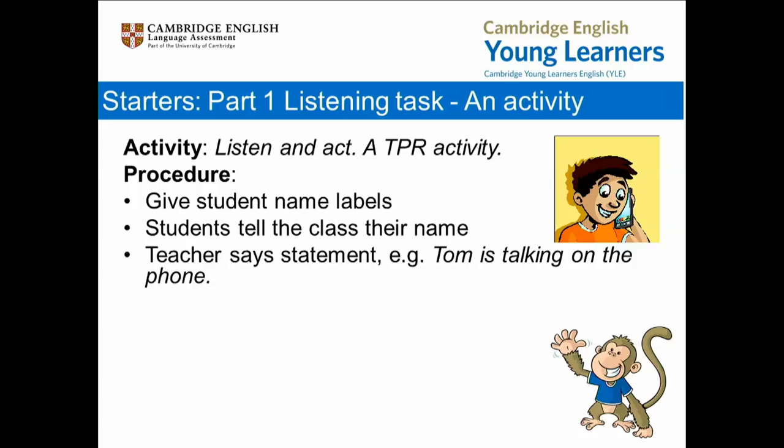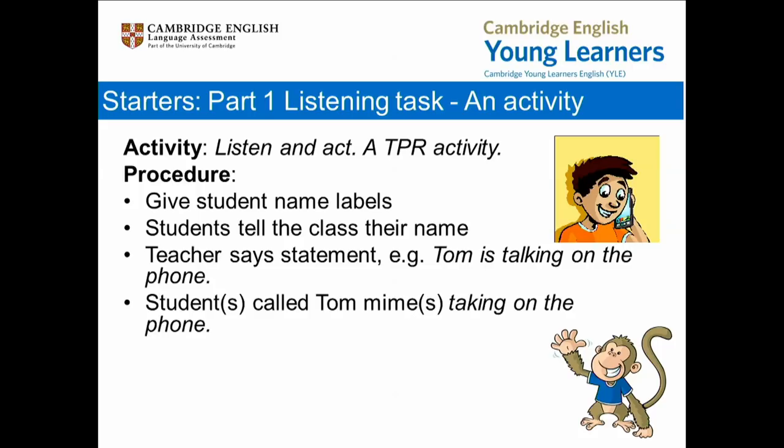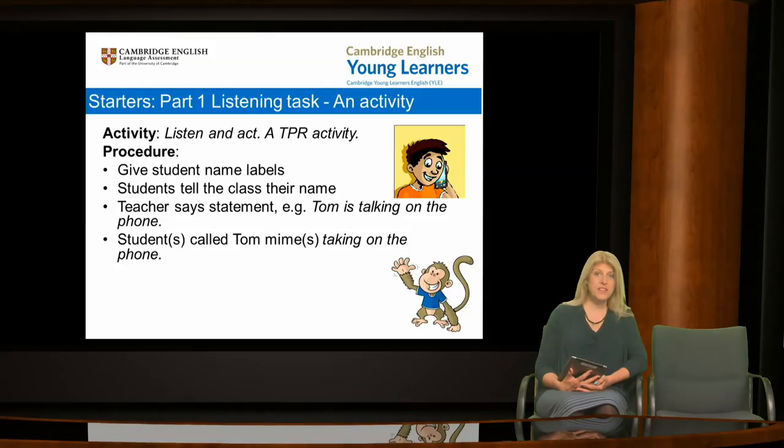Ask the students to listen and do an action. Say some statements in the present continuous, for example, 'Tom is talking on the phone.' Remember to use the word list when coming up with statements. A child or children who are Tom should mime talking on the phone. You could ask the other students in the class to tell you what Tom is doing. In big classes where there are multiple Toms, you could encourage children to race to be first to mime the action, to add an element of competition.